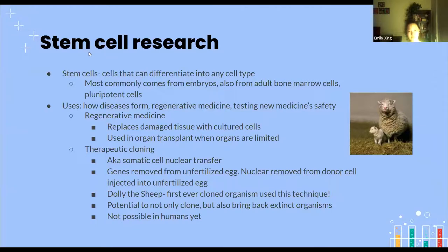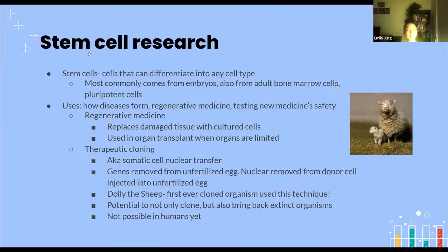Regenerative medicine is basically replacing damaged tissue with cultured stem cells, used in organ transplantation since organs are really limited. By using stem cells we eliminate the need for a healthy donor organ and worries about organ matching. Therapeutic cloning — also called somatic cell nuclear transfer — involves removing the nucleus from an unfertilized egg and injecting a new nucleus, so the egg becomes fertilized and develops. The result of somatic cell nuclear transfer is a clone.